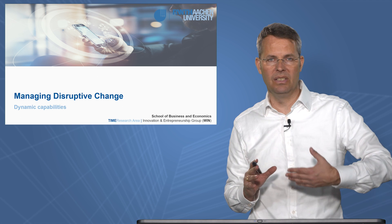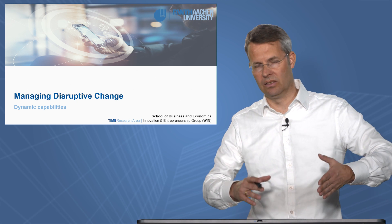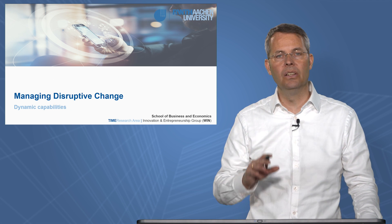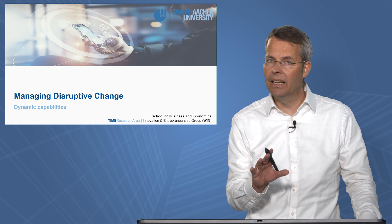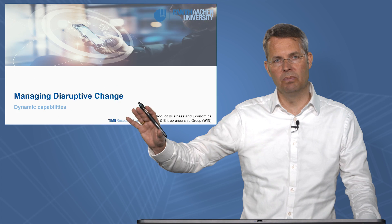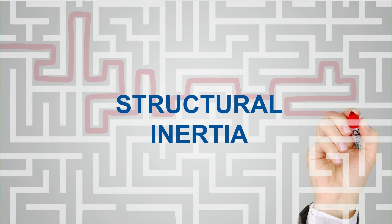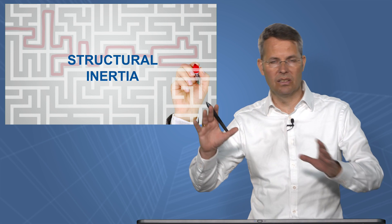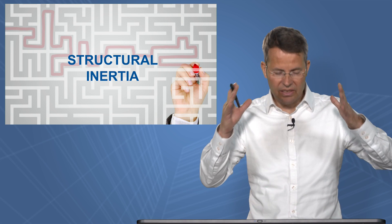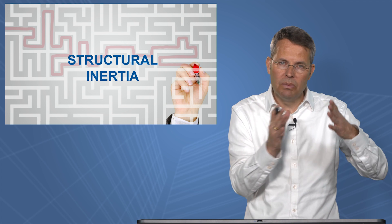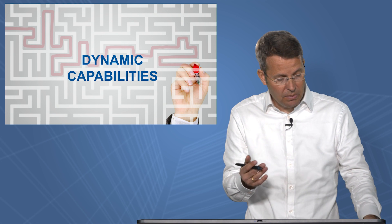So what can you do from a theoretical perspective — and I will get closer to that in the next chapters also from a practical perspective — in order to be prepared for that? The first thing we were talking about was, from a theoretical perspective, structural inertia. Structural inertia basically says companies are successful because they're big, they have a history, and so on. This is why they were successful in the existing processes. However, they are not agile anymore. How can you be agile? By using dynamic capabilities.